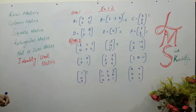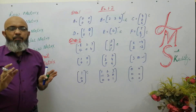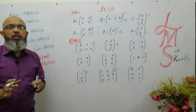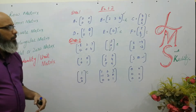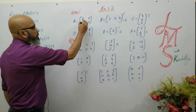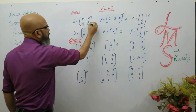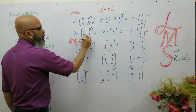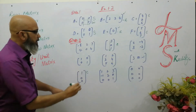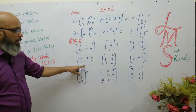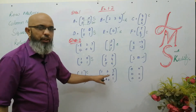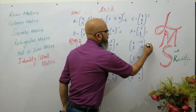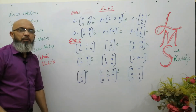Next is square matrix. A square matrix means a matrix that has the same number of rows and columns — that is, its order is 1×1, 2×2, 3×3, or 4×4. So these matrices are called square matrices. This matrix has two rows and two columns (2×2) — it is a square matrix. This matrix also has an equal number of rows and columns — square matrix. This matrix has three rows and three columns — also a square matrix.